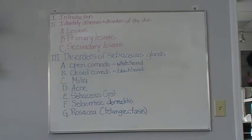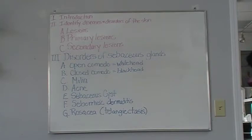Secondary skin lesions are characterized by piles of material on the skin surface, such as a crust or scab, or by depressions in the skin surface, such as an ulcer. A crust is dead cells that form over a wound or blemish while healing — an accumulation of sebum and pus, sometimes mixed with epidermal cells. Excoriation is a skin sore or abrasion produced by scratching or scraping.